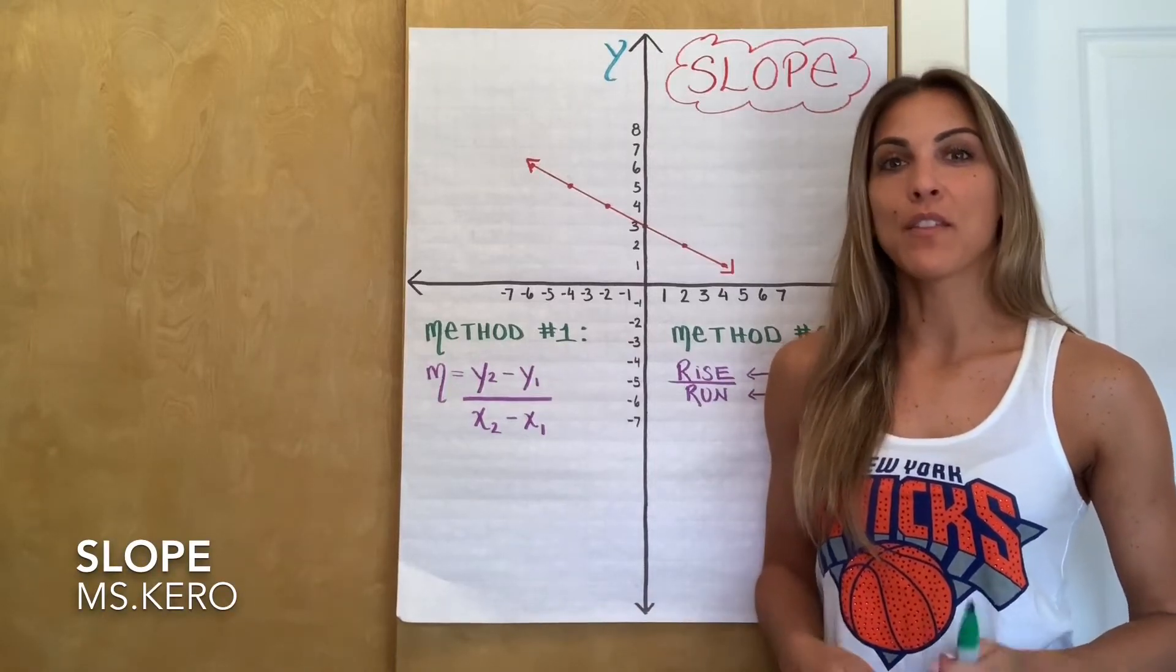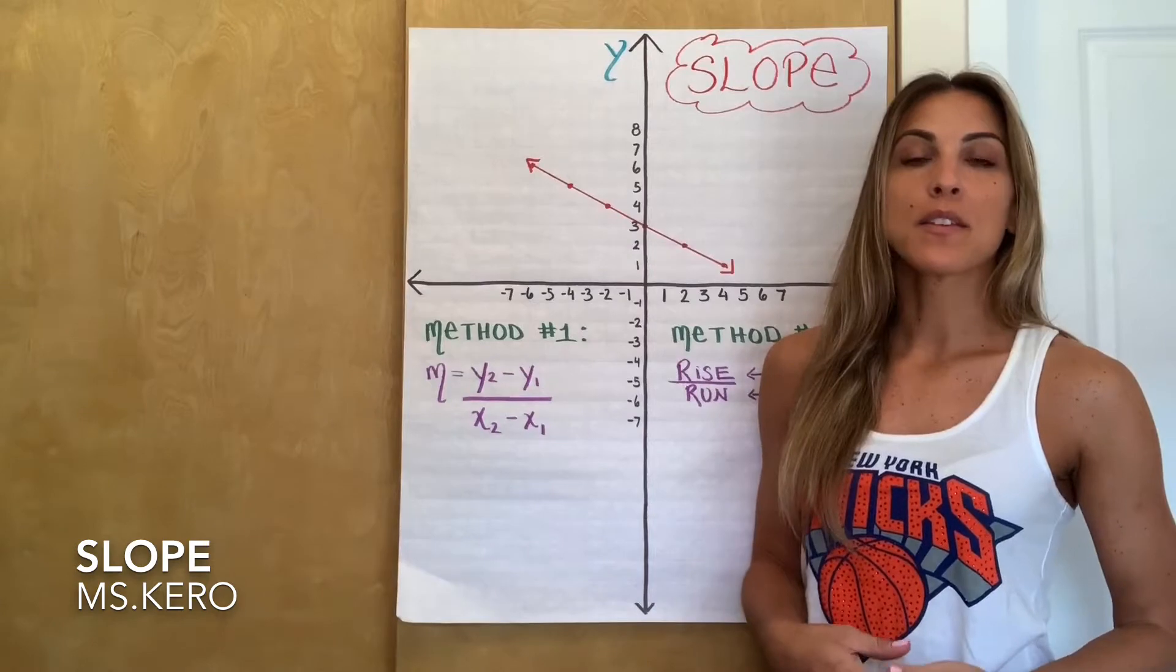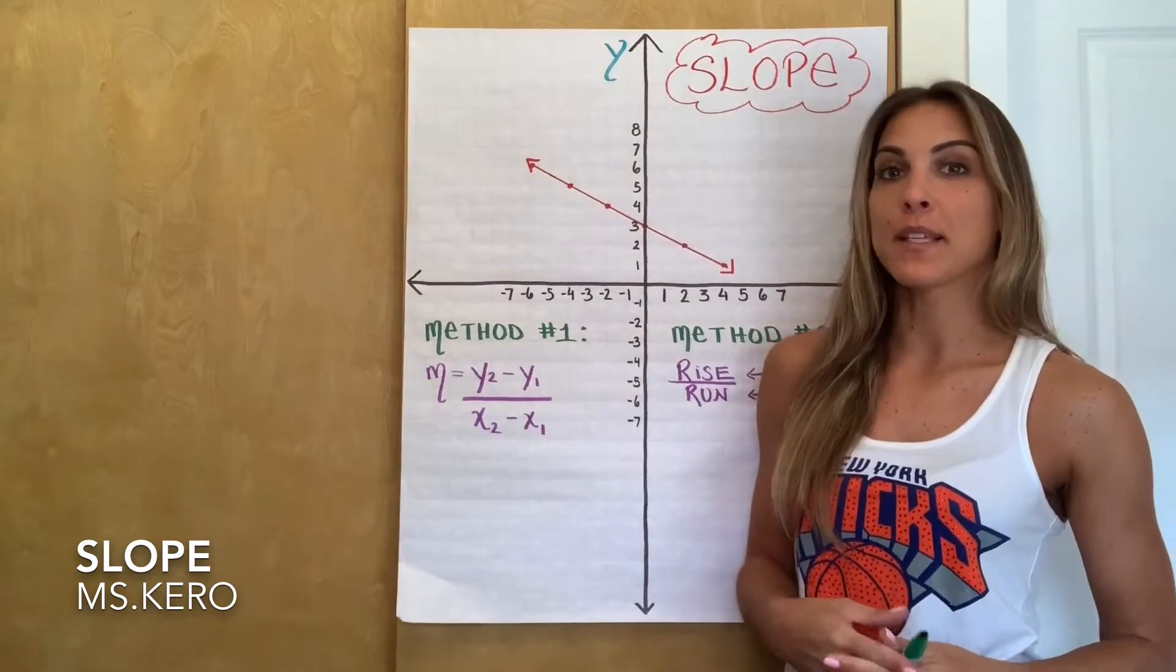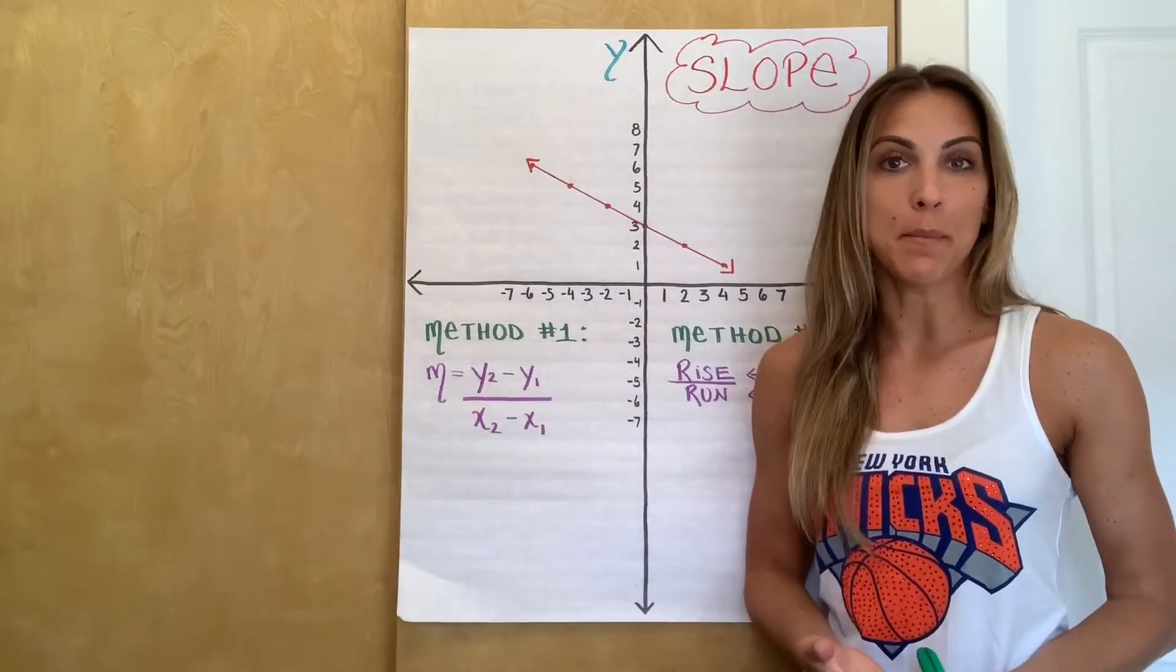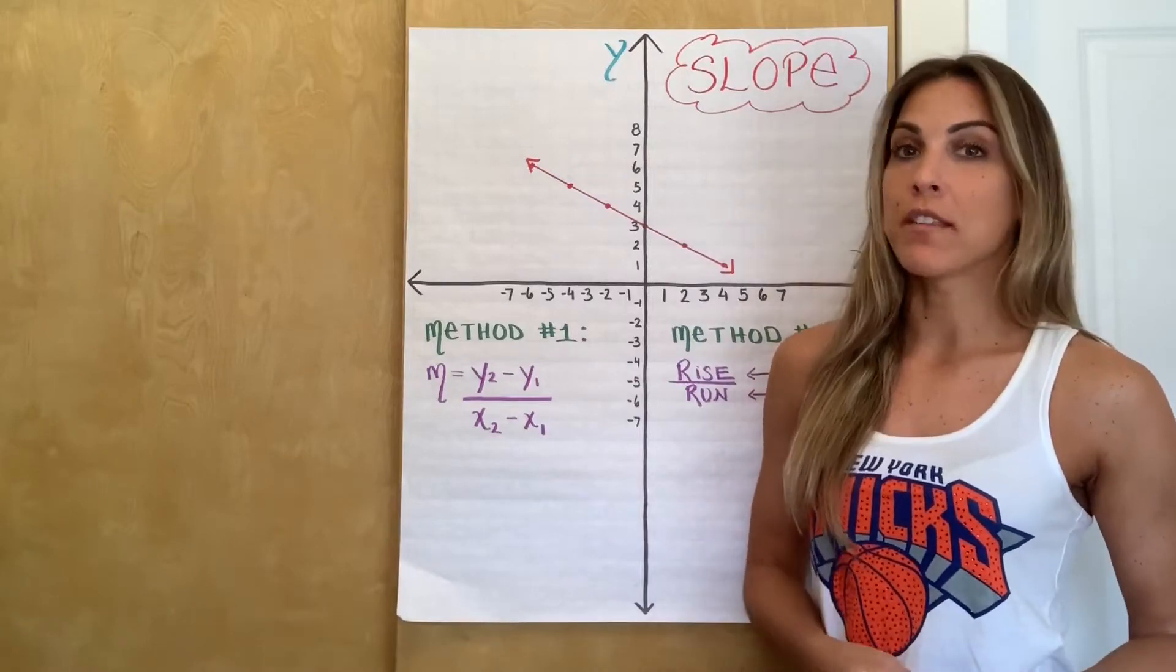Today, we're going to talk about how to calculate the slope of a line. So the slope of a line tells us two different things about the line. It tells us about its steepness, as well as the direction that line is going.